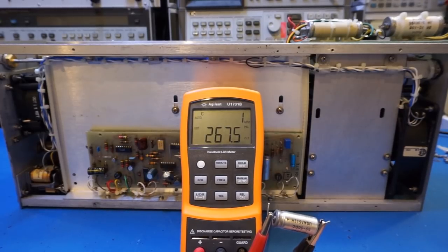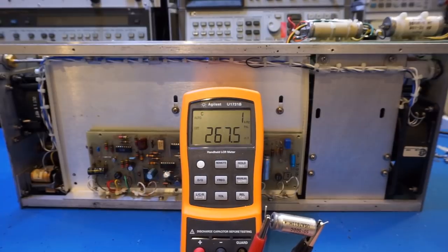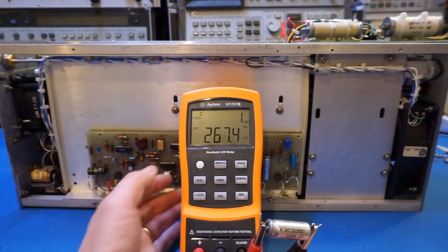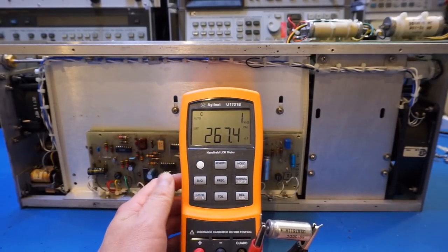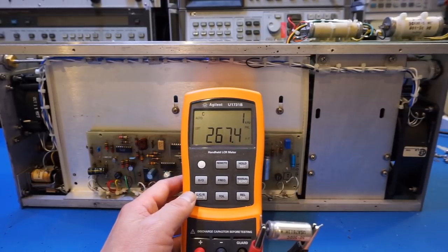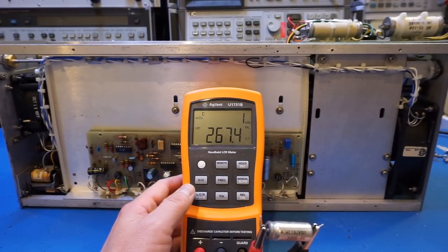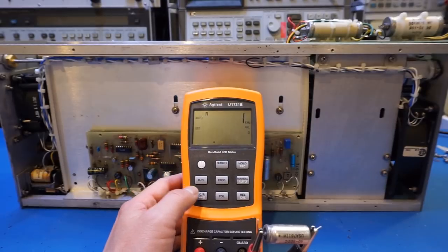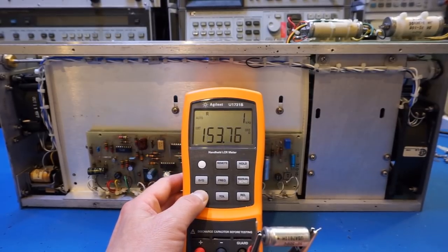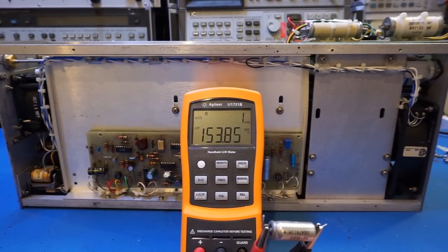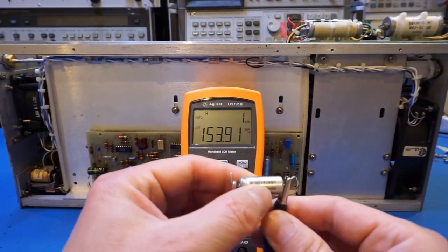And clearly it's way under, right? So this is probably dried out already. So just to make sure we also want to measure the equivalent series resistance here. So this is parallel. Let's change to series. And it's 153 ohms. So clearly this one is bad.